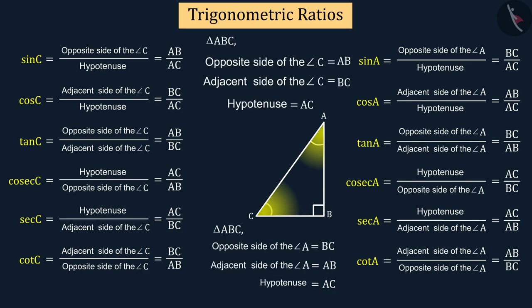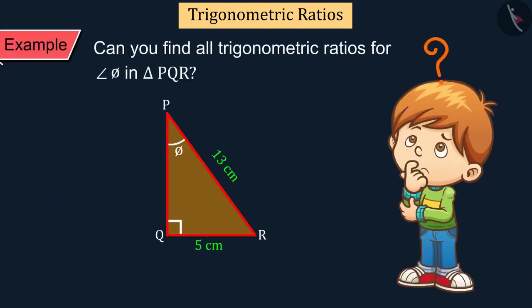If the names of the angles were not written with them, it would be difficult to understand which ratio is written for which angle. Can you find all trigonometric ratios for angle phi in triangle PQR? Try to solve the question. We will discuss it in the next video.